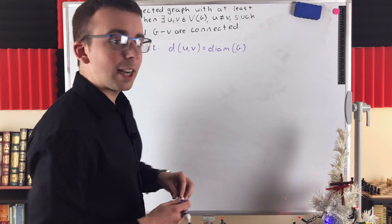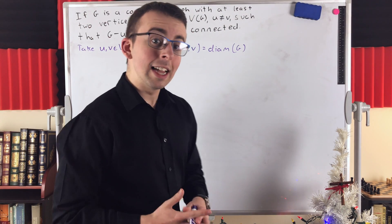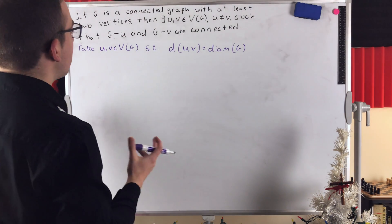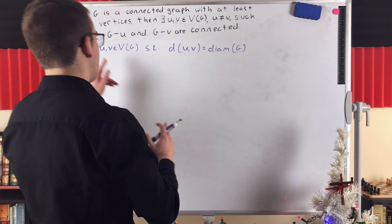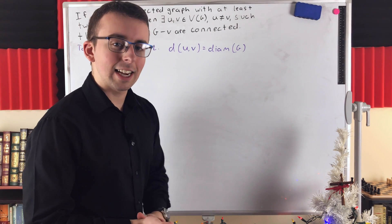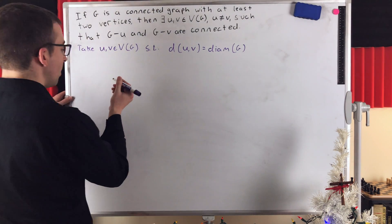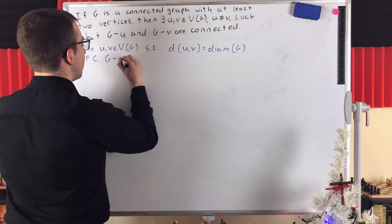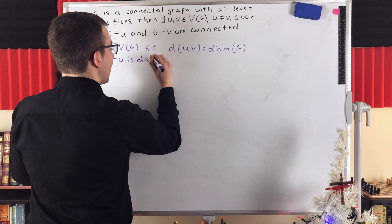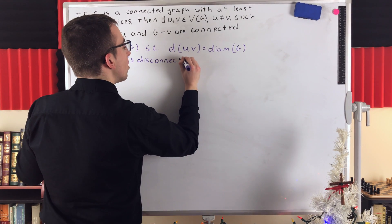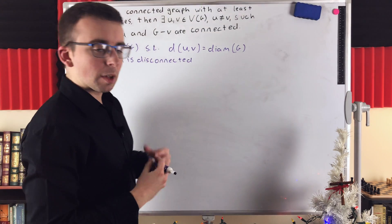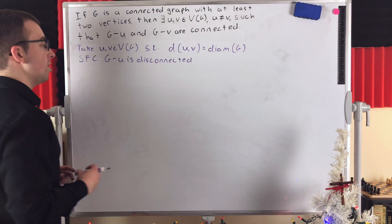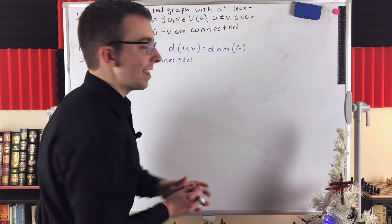Since we want to show that G minus U and G minus V are both connected, our contradiction assumption is to suppose that G minus U or G minus V is disconnected. The argument proceeds the same exact way regardless of which one, so let's just suppose G minus U is disconnected. This argument would apply just as well to G minus V, so all we need to show is that G minus U is in fact connected.